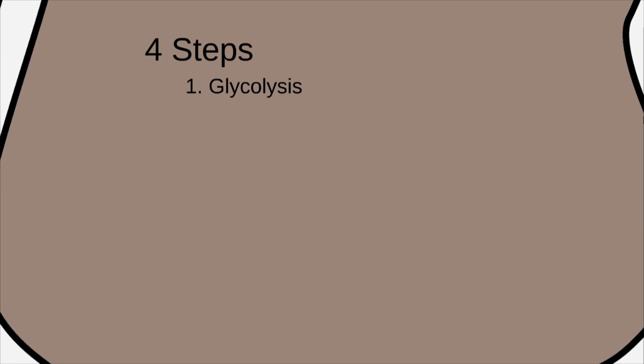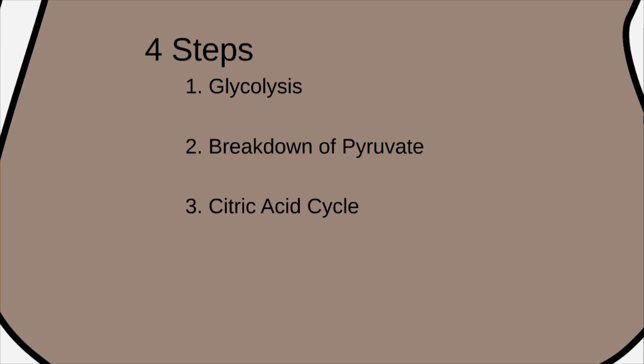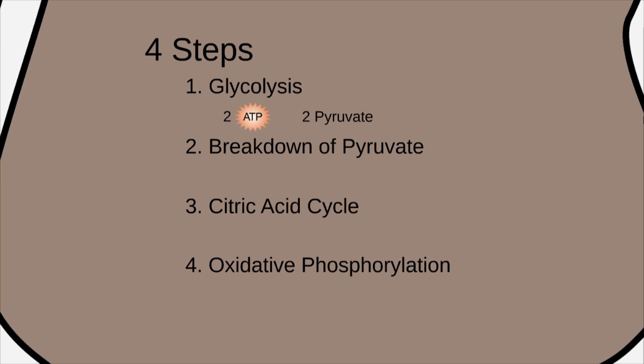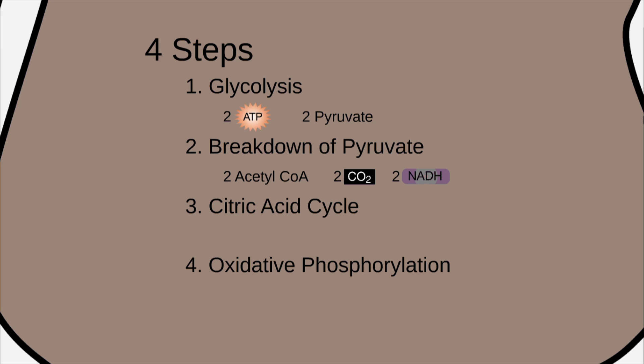In summary, cellular respiration occurs in four steps: glycolysis, breakdown of pyruvate, the citric acid cycle, and oxidative phosphorylation. The breakdown of glucose in glycolysis, which occurs in the cytosol, creates two pyruvate molecules and two ATP molecules via substrate-level phosphorylation. The subsequent breakdown of pyruvate, which occurs in the mitochondrial matrix, produces two acetyl-CoA molecules, two carbon dioxide, and two NADH molecules. The citric acid cycle, which also occurs in the mitochondrial matrix, creates two ATP, two carbon dioxides, two FADH2 molecules, and six NADHs. Oxidative phosphorylation includes the electron transport chain and chemiosmosis.